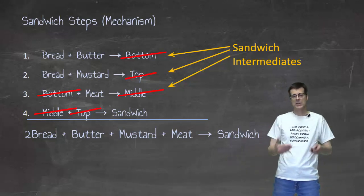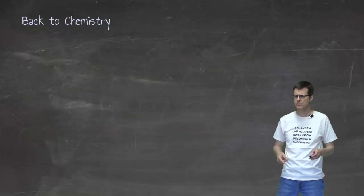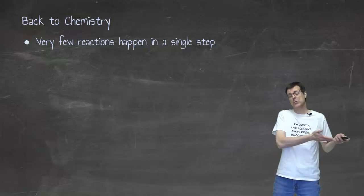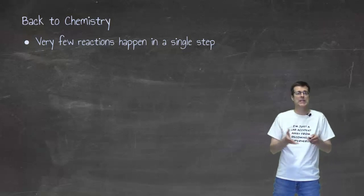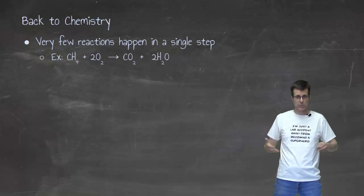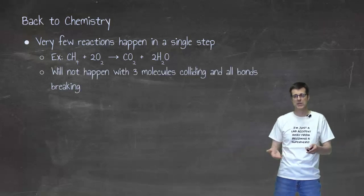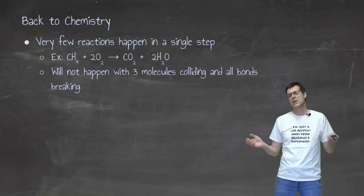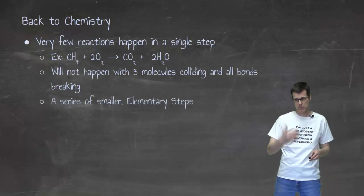I had to do it in all those individual steps. But if I relate that to chemistry, the reality is very few reactions happen in a single step. We often write them as a complete single-line reaction, but rarely do they actually happen in a single step — they're going to happen in multiple steps. If I take this reaction, for example, methane plus two oxygen producing carbon dioxide and two waters, it is not going to happen in a single step. There are just too many bonds that would have to break and too many bonds that would have to form. It's going to happen in multiple steps.